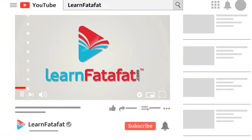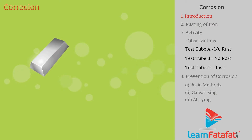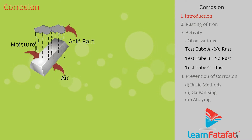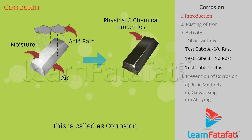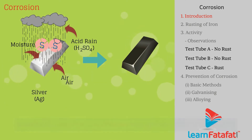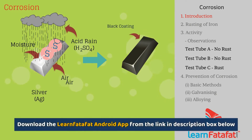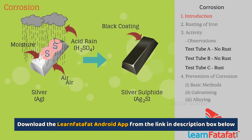Corrosion. Metals are attacked by substances around them such as acid, rain, moisture, and air, causing damage in terms of physical and chemical properties, called corrosion. For example, silver articles become black over time as it reacts with sulphur to form silver sulphide.